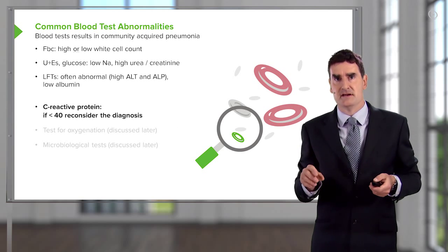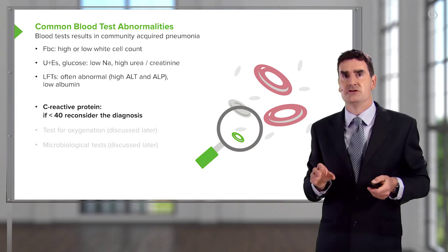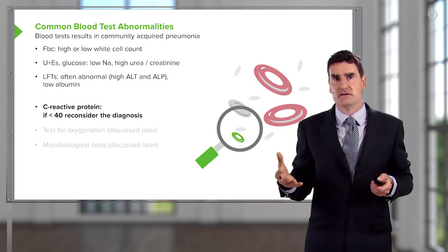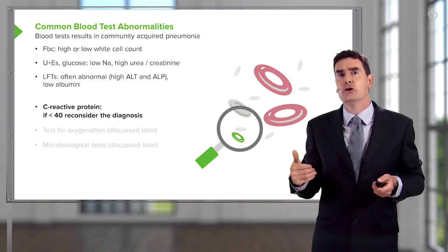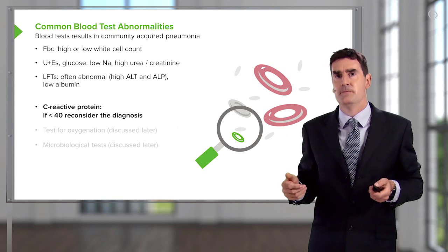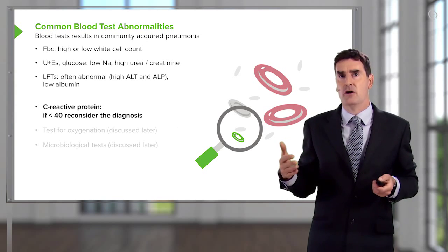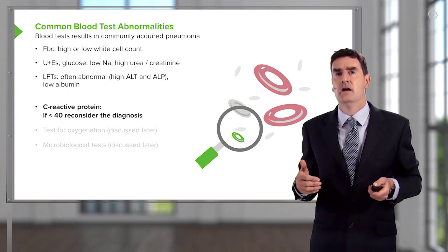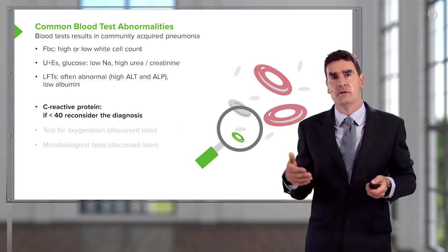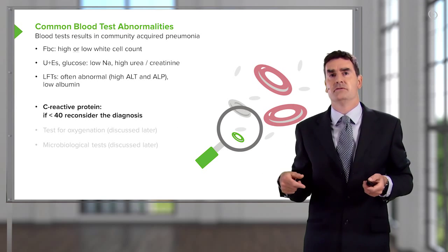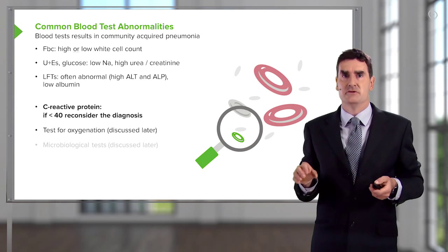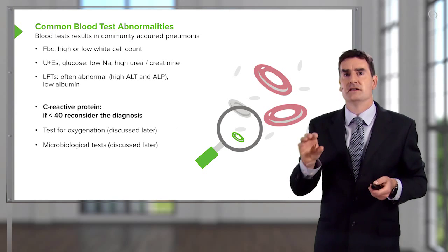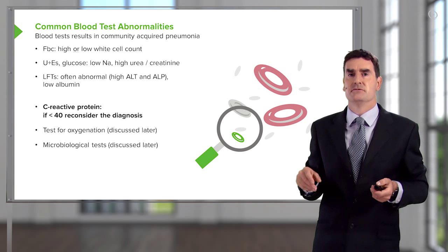Possibly the most important blood test is the C-reactive protein, a marker of inflammation. In pneumonia, there should be a very significant inflammatory response, so the CRP, which is normally less than 5, goes up very rapidly. If the CRP has not gone above 40, you might want to reconsider the diagnosis, as it may not be pneumonia. In fact, it's not uncommon for CRP to be above 100, 200, or even 500–600 in patients with acute pneumonia. Other blood tests include oxygenation tests and tests for potential infecting pathogens, which will be discussed later.